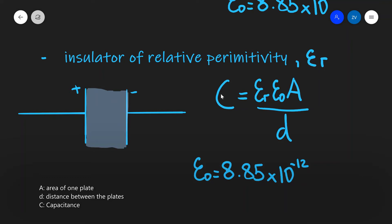In this case the capacitance will be given by the formula Er the relative permittivity times E0 the permittivity of free space which is 8.85 times 10 to the power of minus 12 times the area of one of those plates divided by the distance between them.